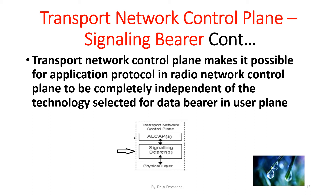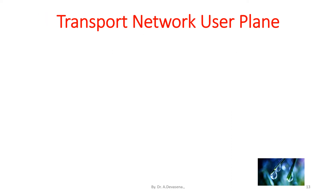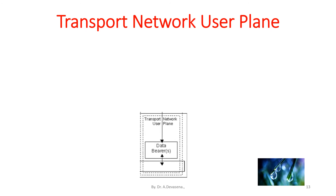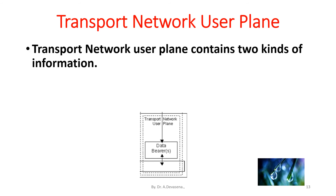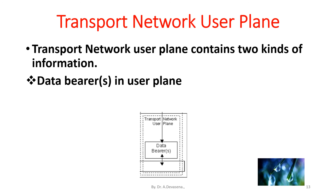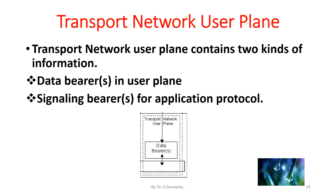The transport network user plane contains two kinds of information: one is data bearers in the user plane, and the other is signaling bearers for the application protocol.